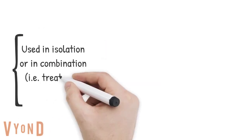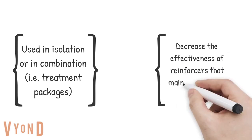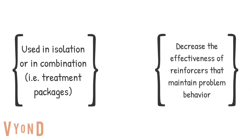Antecedent interventions can be used in isolation or in a combination like a treatment package — including extinction, differential reinforcement, etc. It also decreases the effectiveness of reinforcers that maintain the problem behavior. An abolishing operation means they don't need to exhibit that problem behavior because that function has already been met.